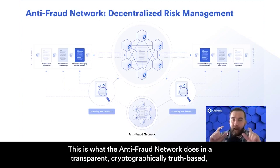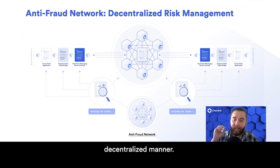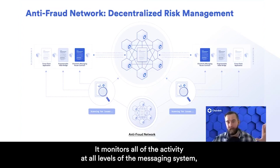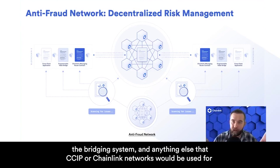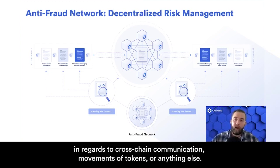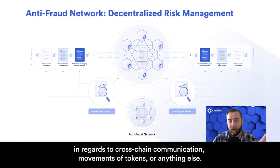This is what the anti-fraud network does in a transparent, cryptographically truth-based, decentralized manner. It monitors all of the activity at all levels of the messaging system, the bridging system, and anything else that CCIP or Chainlink networks would be used for in regards to cross-chain communication, movements of tokens, or anything else.